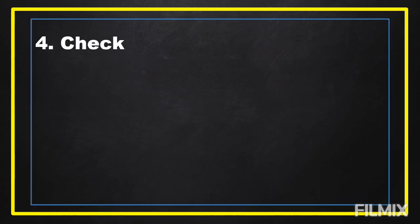The last step is to check whether our answer is correct. We found one-third of 90 equals 30. If we subtract 90 minus 30, the answer is equal to 60. So 30 are grade 6 pupils and 60 are grade 5 pupils. All in all, there are 90 pupils from grades 5 and 6 who participated in the program. So we got the correct answer.